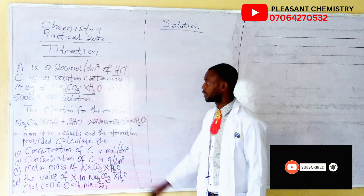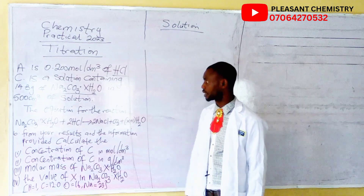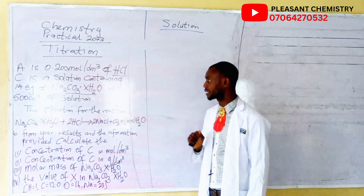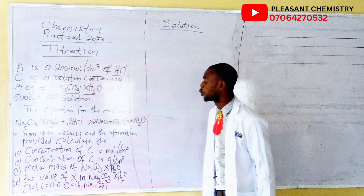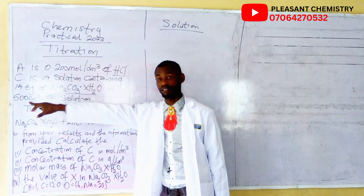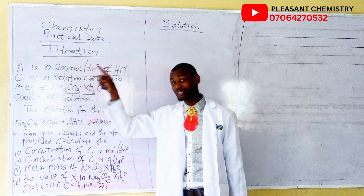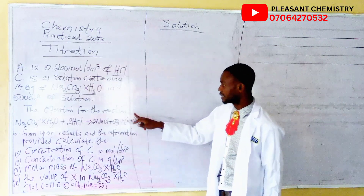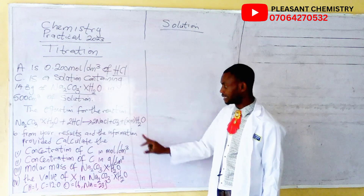Now these are the likely questions. Read with me. A is 0.200 mole per dm³ of hydrochloric acid, while C is a solution containing 14.3 grams of sodium carbonate·X water. This is a hydrated salt, which means that it contains water of crystallization. This 14.3 grams dissolves in 500 cm³ of solution. There is supposed to be 14.3 grams in 1000 cm³ for you to have a standard solution. And this is the chemical equation for the reaction — the equation is balanced. These are the questions we are going to solve step by step.